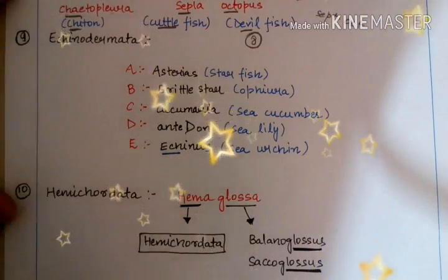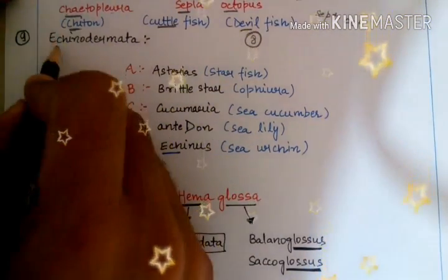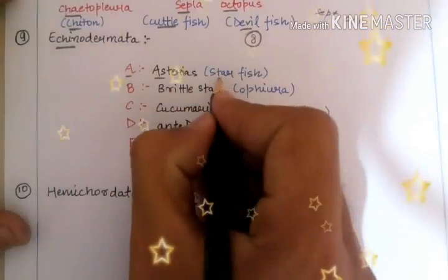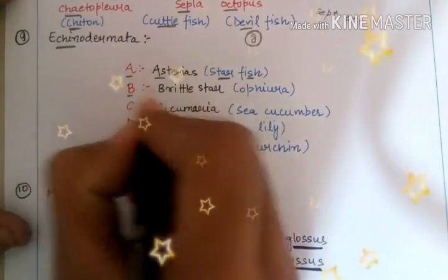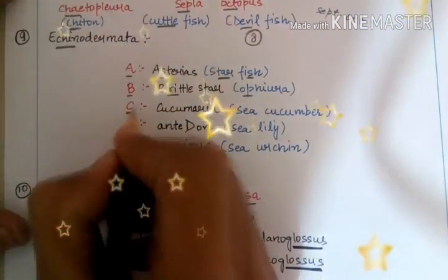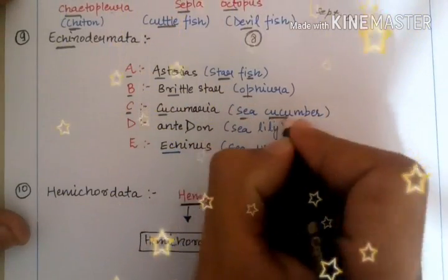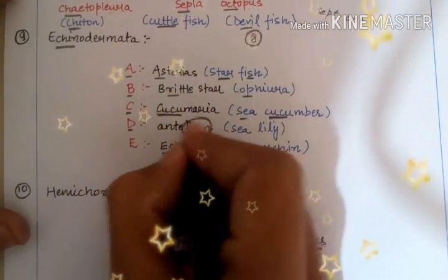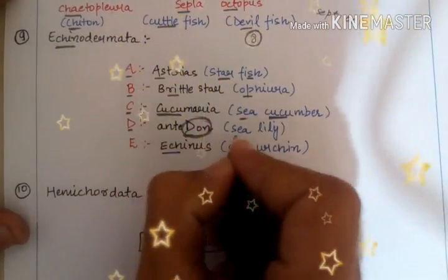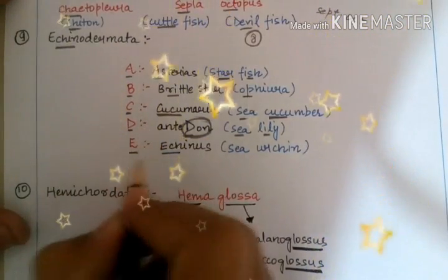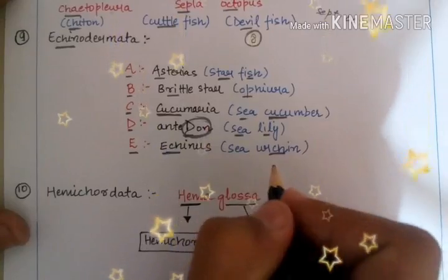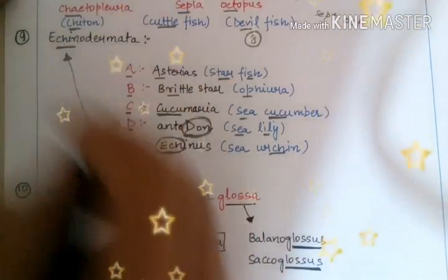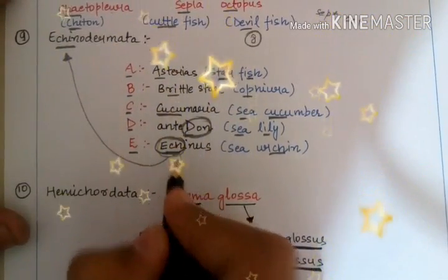The trick for Echinodermata is very easy — it is simply ABCDE. A means Asterias, that is the starfish. B means brittle star, that is Ophiura. C means Cucumaria, that is the sea cucumber. D means Antedon — 'dawn' is a heavy word so emphasize on it — Antedon is known as sea lily. E means Echinus, that is the sea urchin, and from Echinus we can also remember Echinodermata since both have similar pronunciation and spelling.